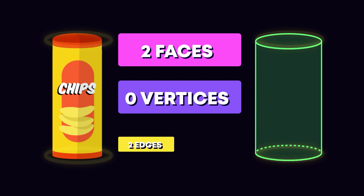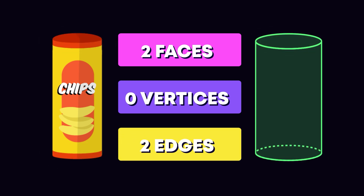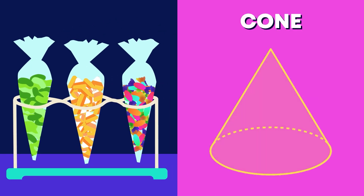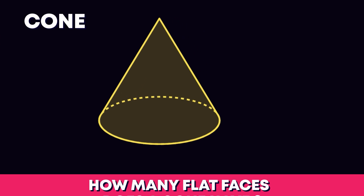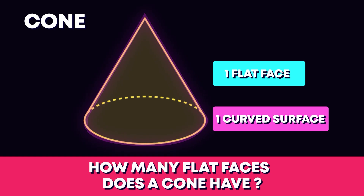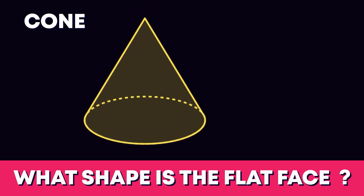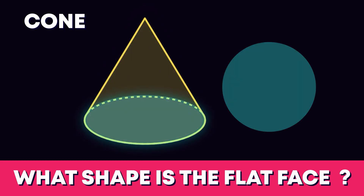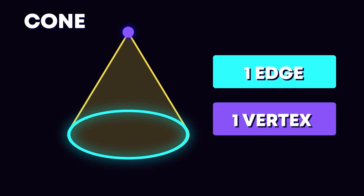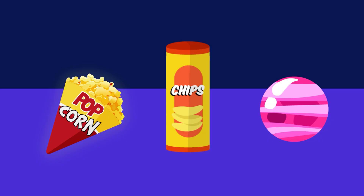These sweets are in the shape of a cone. Cone is the name of another 3D shape. How many flat faces does a cone have? It has one flat face and one curved surface. What shape is this cone's flat face? Yes, it's a circle! It also has one edge and one vertex.